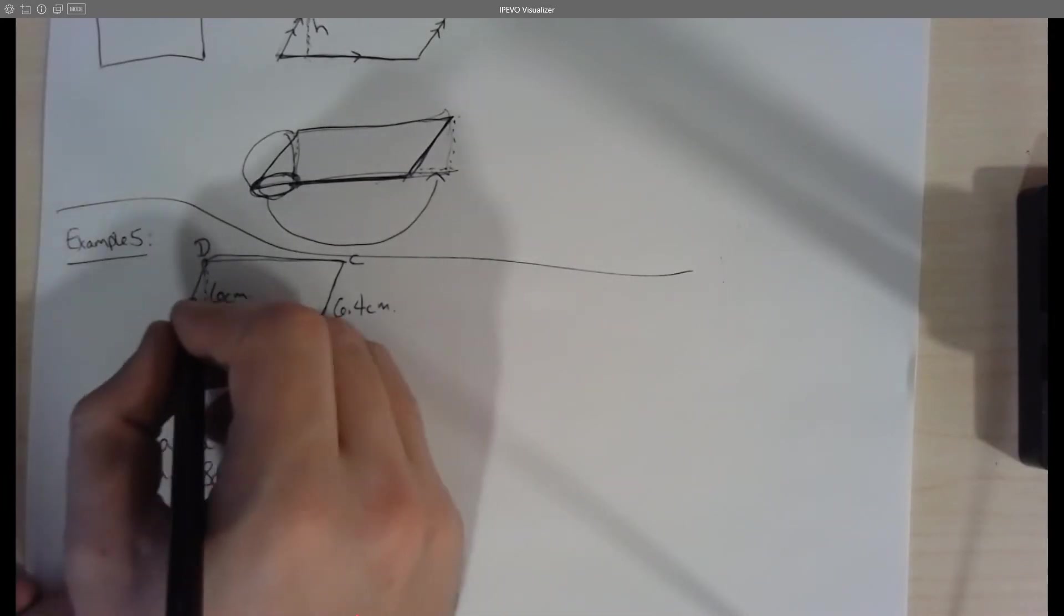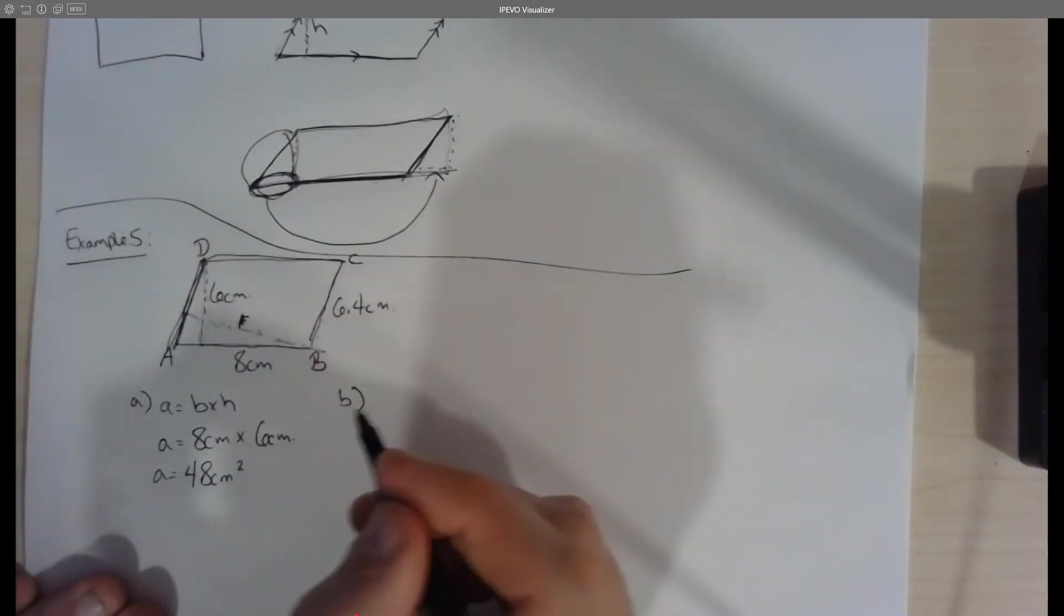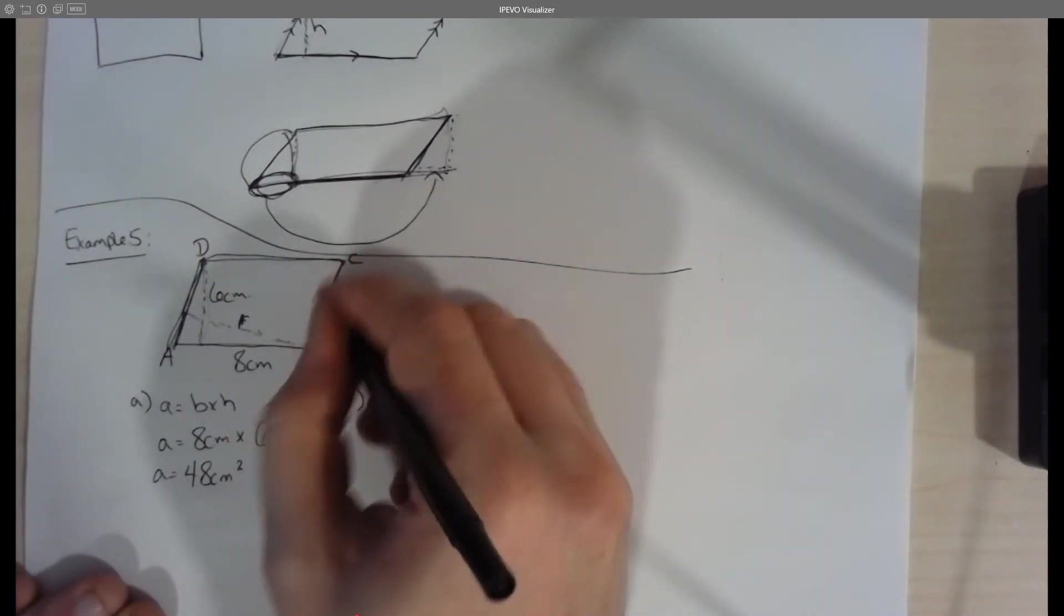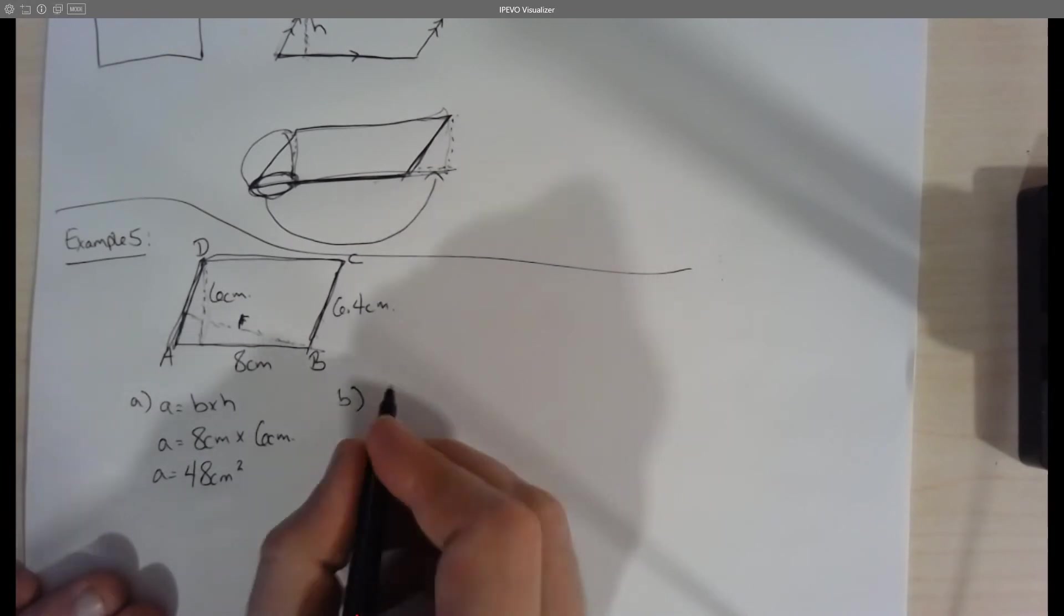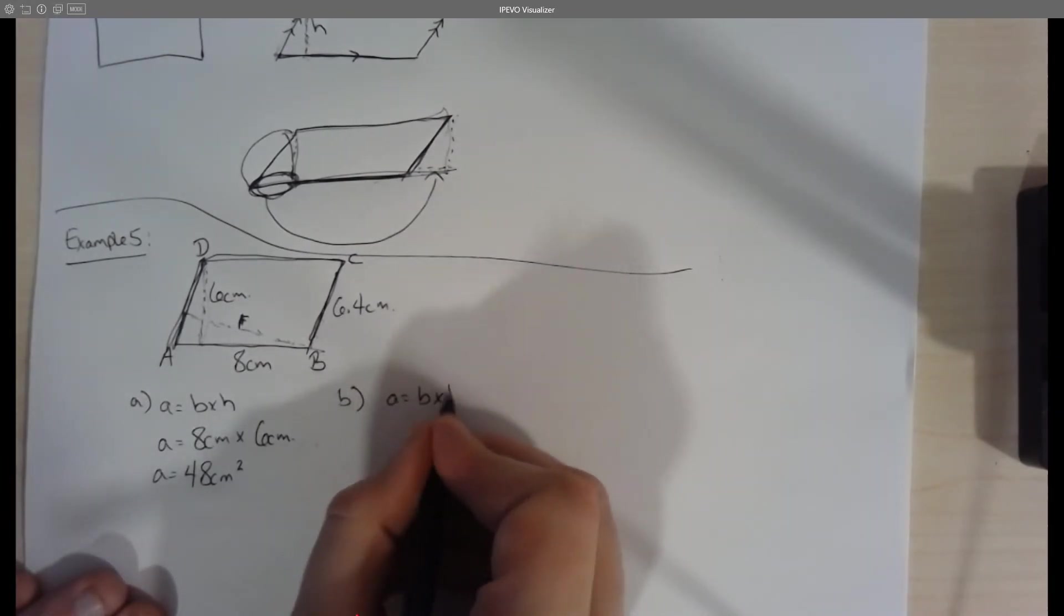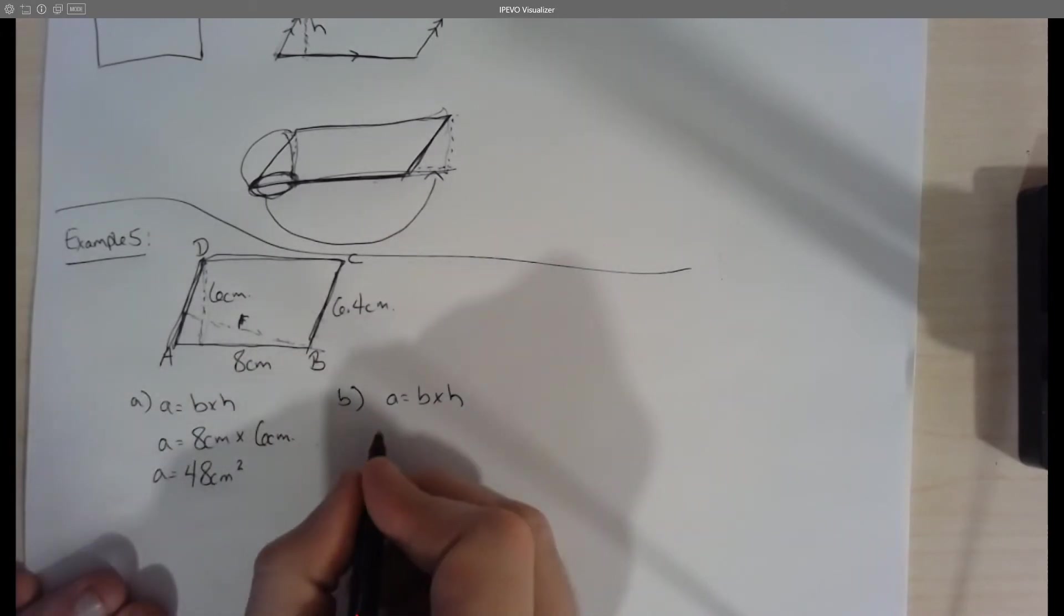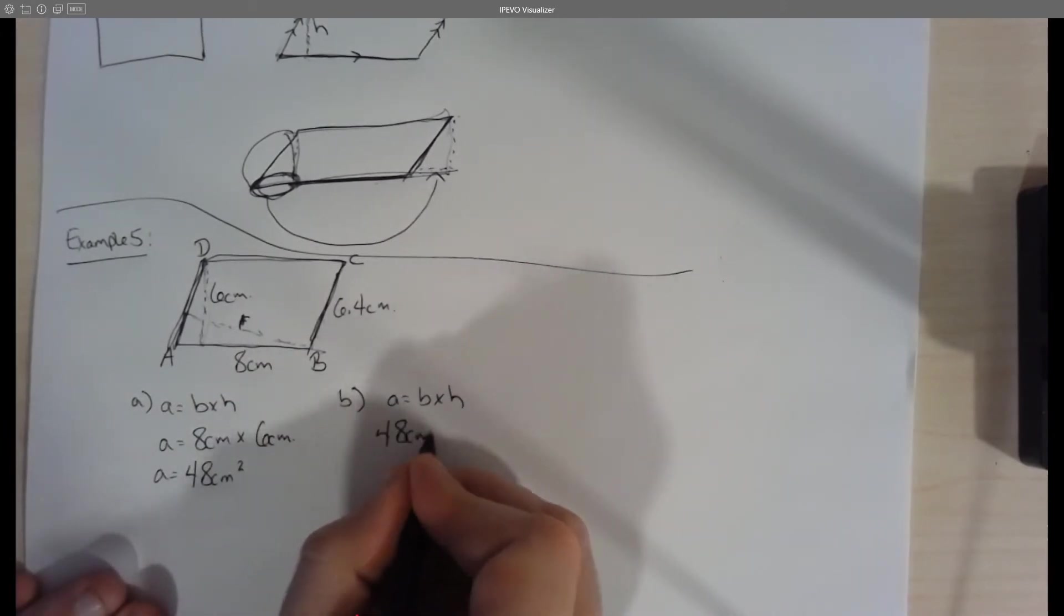So for this particular example, BF, this line is perpendicular to AD. And AD is the same as BC. So our new area, we know what our area is. We're using area equals base times height. We already figured out our area is 48 centimeters squared.